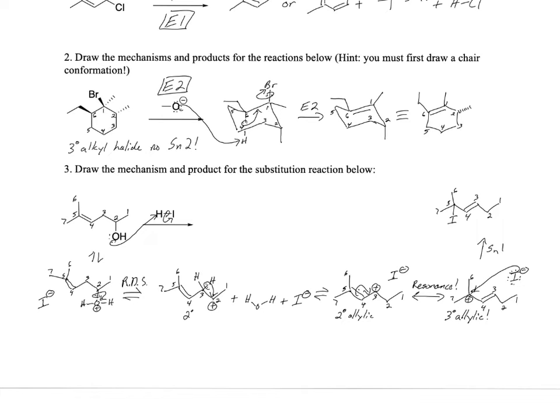So take a look at Workshop 6: Draw the mechanisms and products for the reaction below. Hint: you first must draw a chair conformation. I think for this one, the hint here is you look at the type of electrophile.